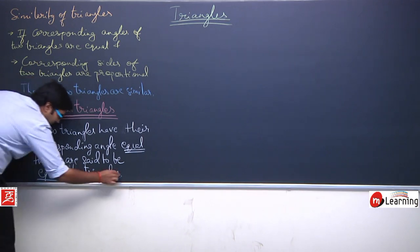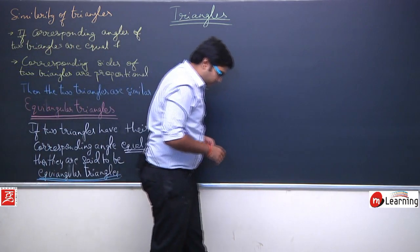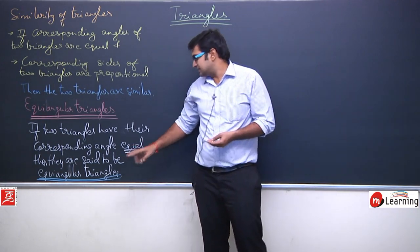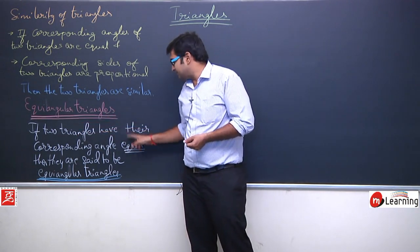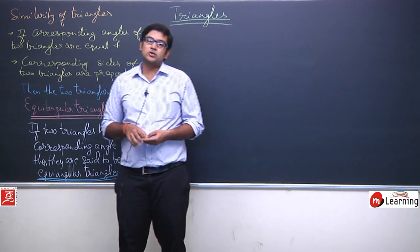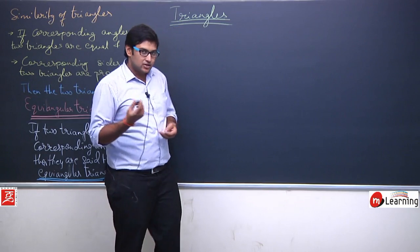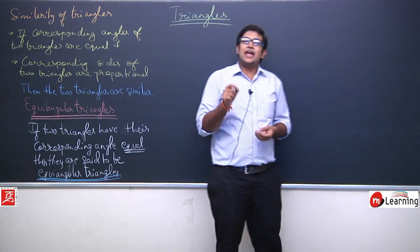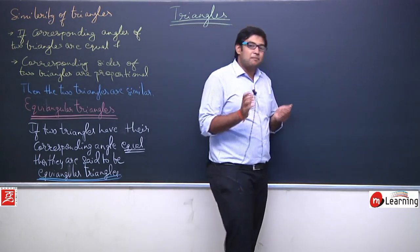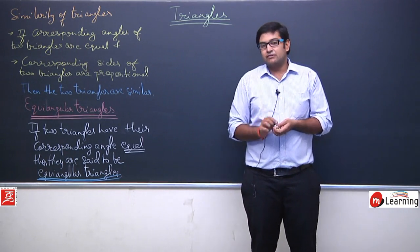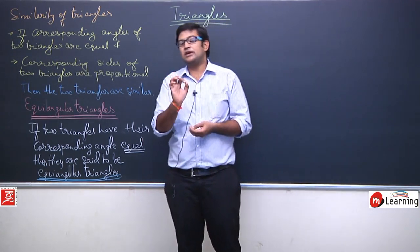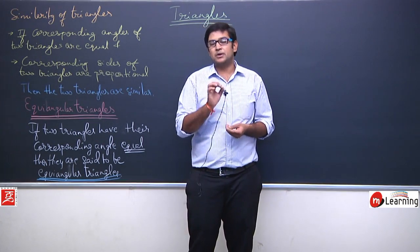Try to understand this concept. What he said is: if in two triangles the corresponding angles are equal, then they are said to be equiangular triangles. He then said that in any pair of equiangular triangles, any two sides will be proportional — any two sides of equiangular triangles will be proportional.